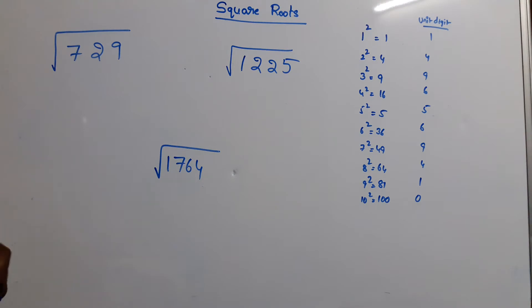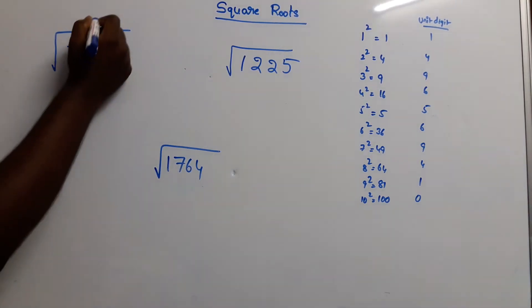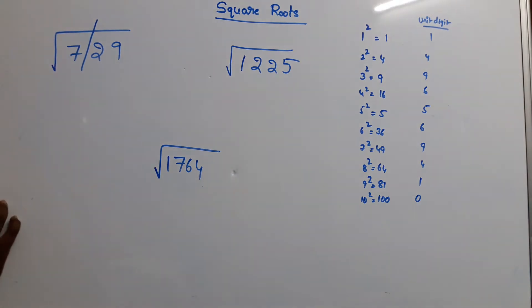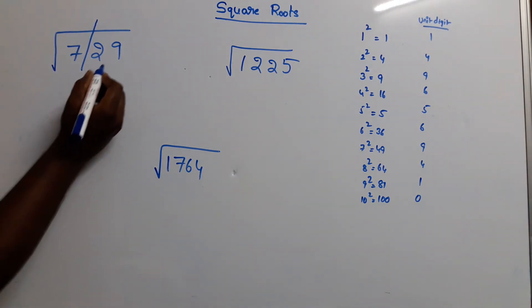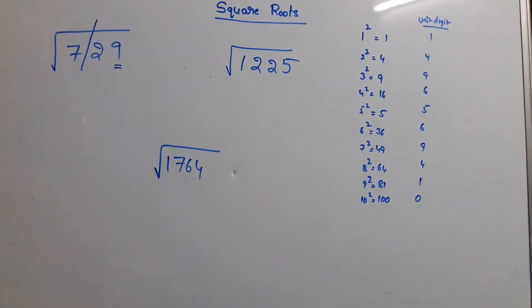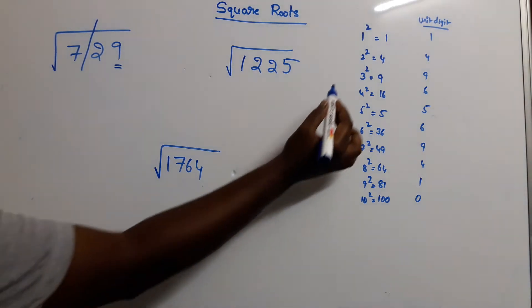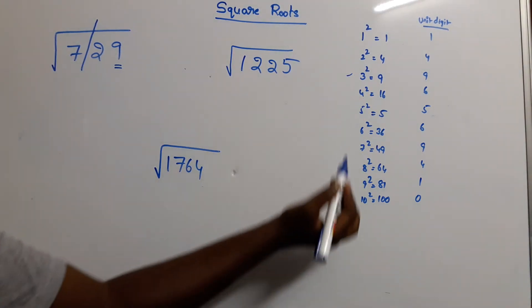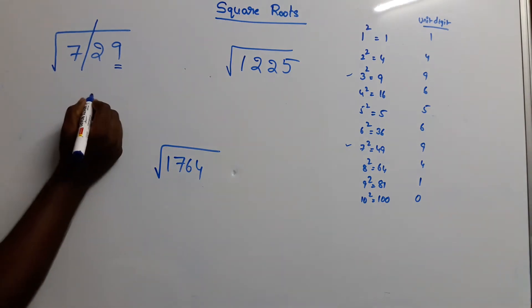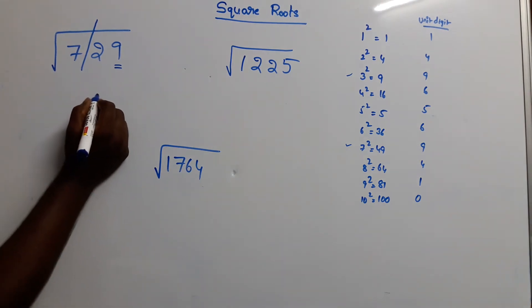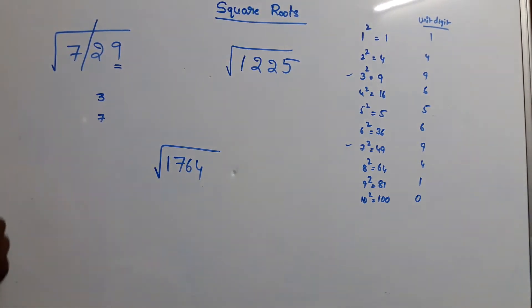What you want to see? First, two digits — you need a small slash. The unit digit is 9. If you want to see it, you need 3 square or 7 square. So last, you need to see the numbers 3 or 7.